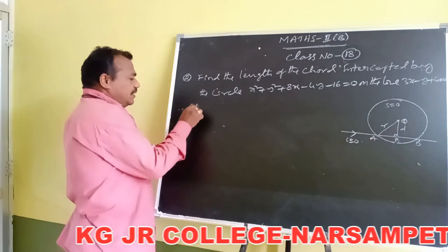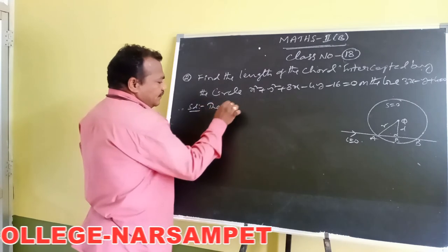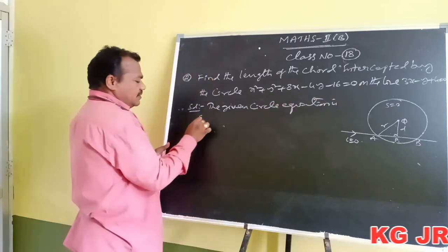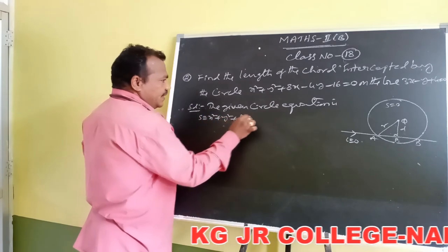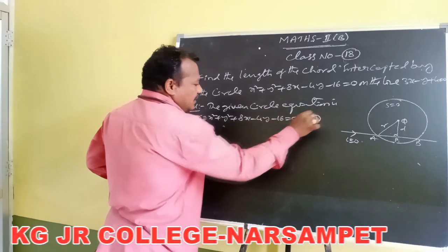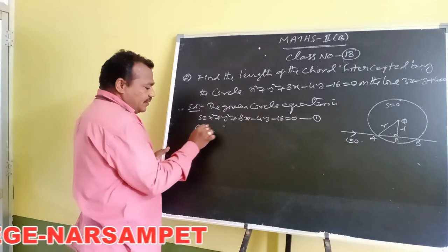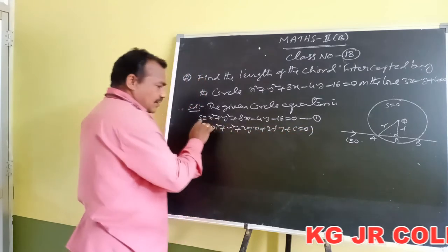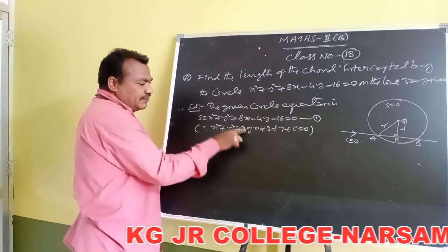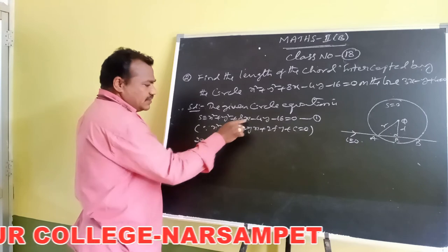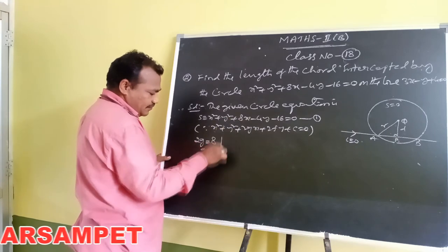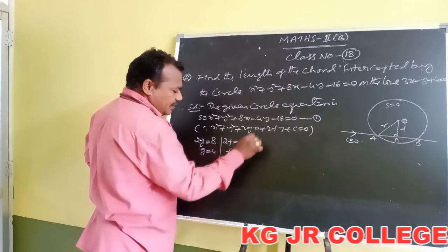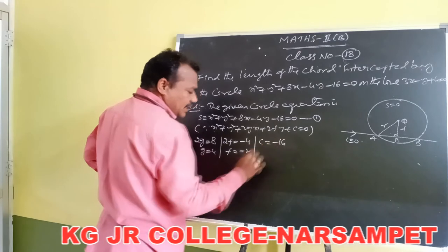First, write the center and radius of the given circle. The given circle equation is s = x² + y² + 8x - 4y - 16 = 0. Comparing with the general form x² + y² + 2gx + 2fy + c = 0: the coefficient of x gives 2g = 8, so g = 4; the coefficient of y gives 2f = -4, so f = -2; and the constant c = -16.